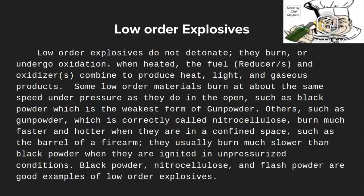This occurs in the barrel of a firearm, like a rifle. To recap: nitrocellulose usually burns much slower than black powder when ignited in unpressurized conditions. Black powder, nitrocellulose, and flash powder are good examples of low-order explosives.